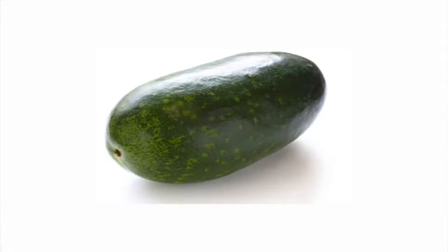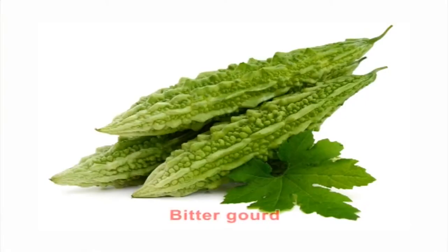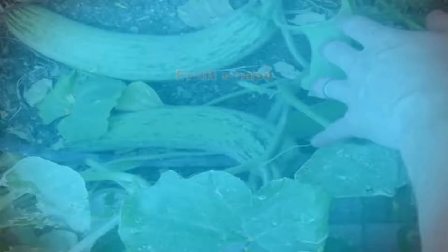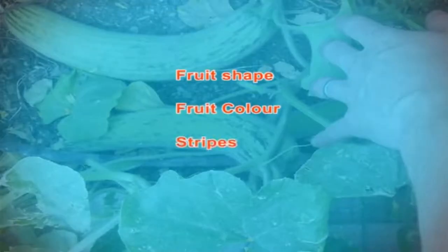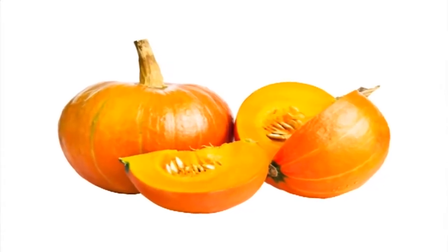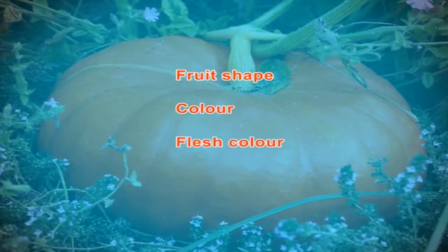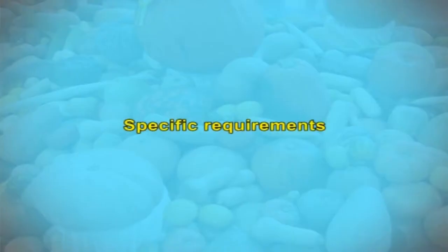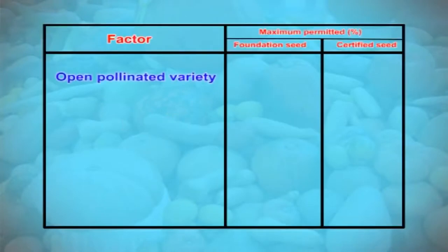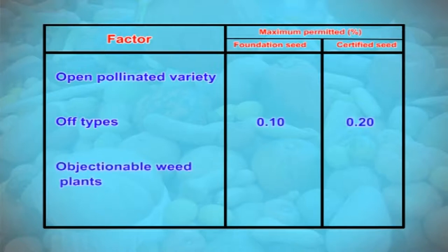For gourds like ash gourd, ribbed gourd, snake gourd and bitter gourd, roguing has to be done based on fruit shape, fruit colour, stripes and neck. For pumpkin, roguing has to be done based on fruit shape, colour and flesh colour. In open pollinated varieties, the maximum permitted percentage of off-types for foundation seed is 0.1% and for certified seed is 0.2%, and objectionable weed plants should not be present in the field.